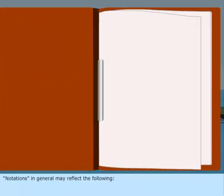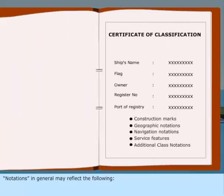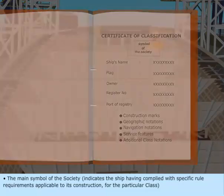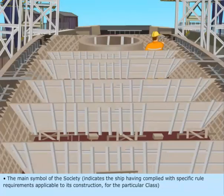Notations, in general, may reflect the following. The main symbol of the society indicates the ship having complied with specific rule requirements applicable to its construction for the particular class.